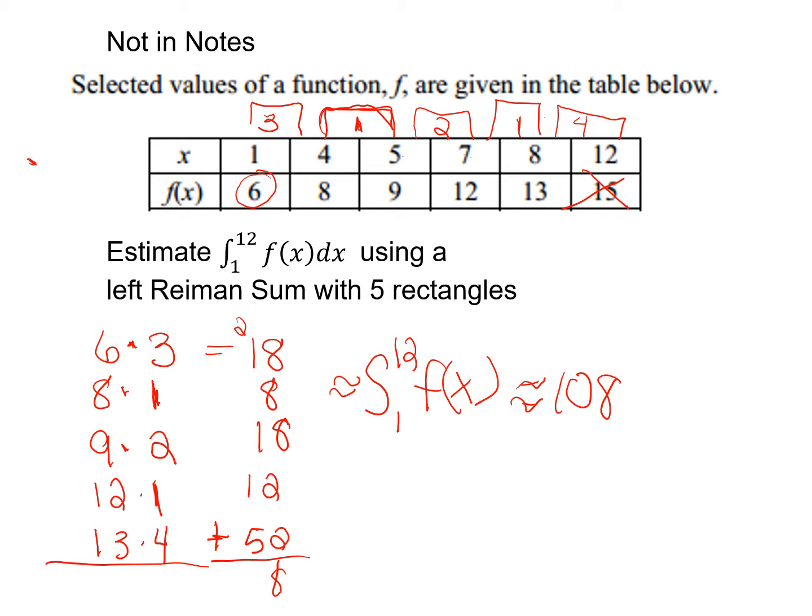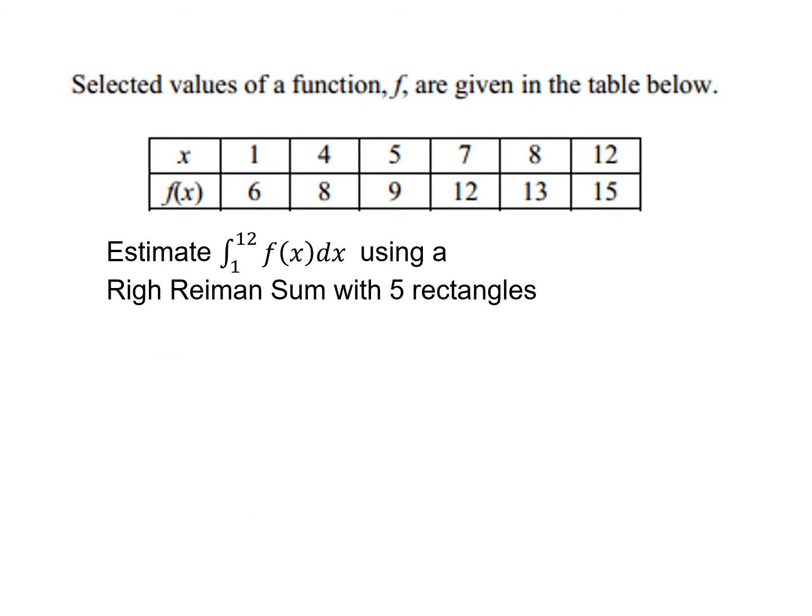All right, let's do a different example. Now we're doing a right Riemann sum. So remember if I'm doing a right Riemann sum, I like to start from the right. So I'm going to go, my first rectangle will go from here to here and then here. You're getting smaller and smaller, aren't they?